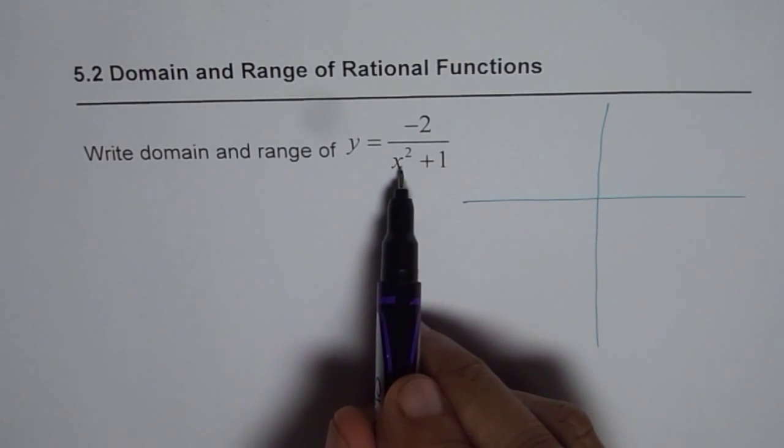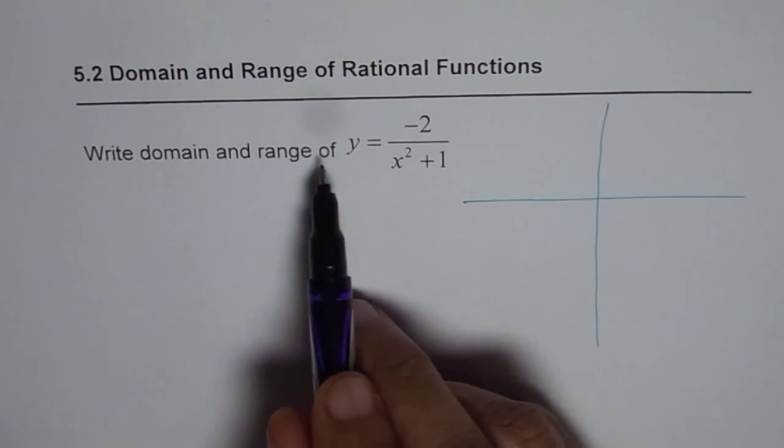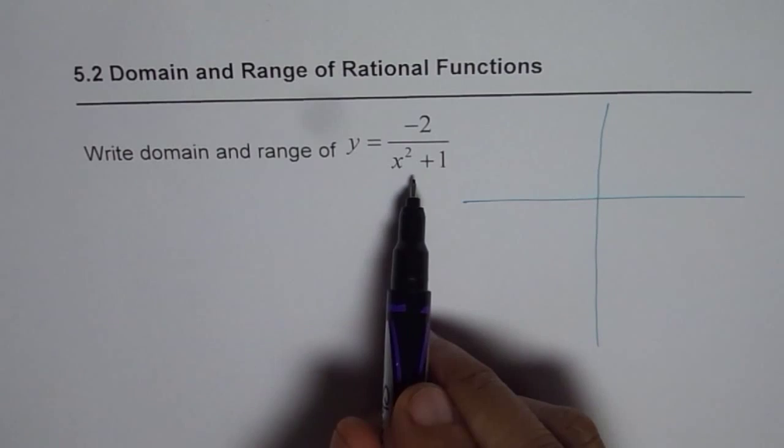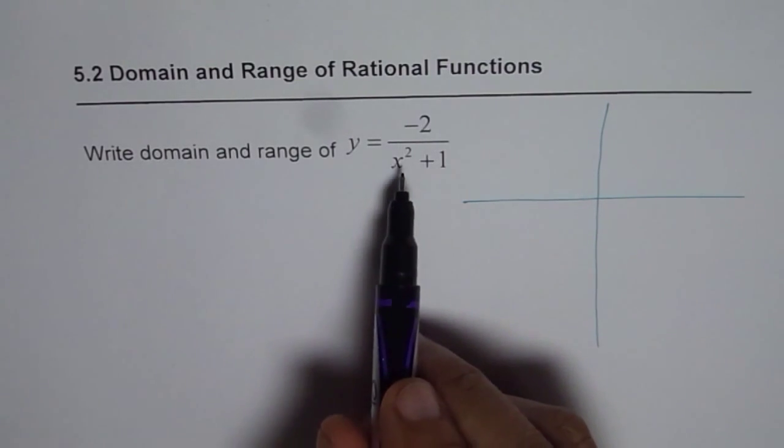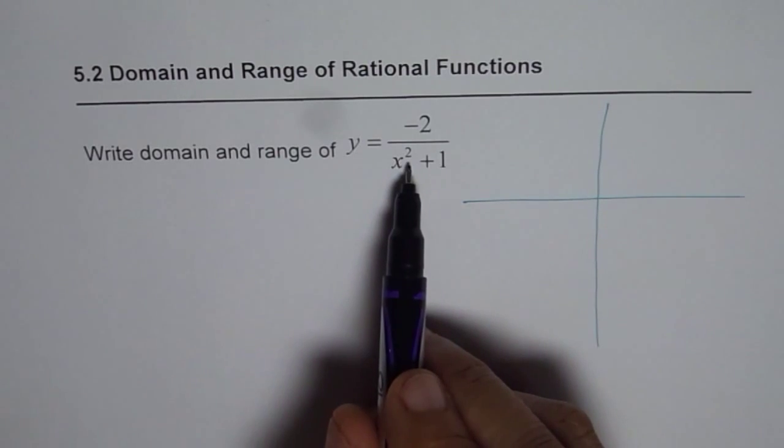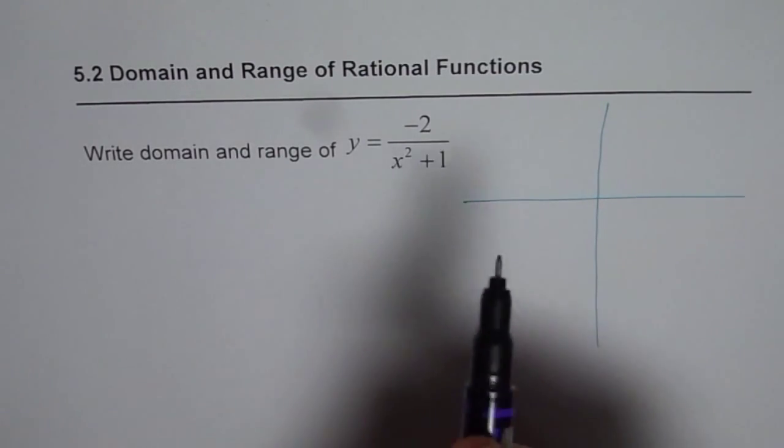And therefore we do not expect a vertical asymptote for the reciprocal of this function. However we see the numerator has got minus 2 that means this parabola is reflected. So we expect a graph which would be kind of like this.